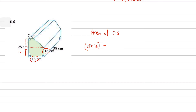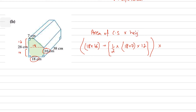The parallel lengths of the trapezium are 18 and 7, with height 12. So area of cross section equals 18 times 16, plus one-half times (18 + 7) times 12. Multiply the total area of cross section by the height of the prism, which is 38 — the perpendicular distance between the two identical faces. The volume equals 16,644 cm³.